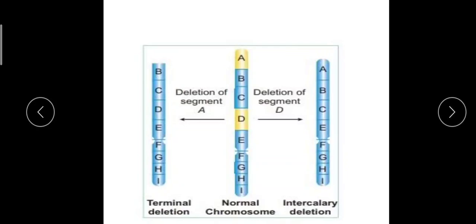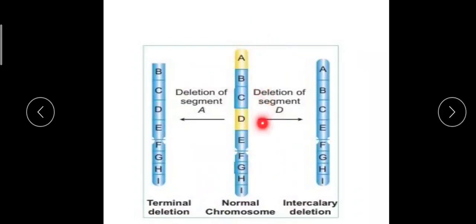Regarding heterozygous deletion: if we have two homologous chromosomes and deletion of segment 'a' occurs only in one chromosome while the other homologous partner still has the 'a' segment, then we call it heterozygous deletion. Only one chromosome of the pair undergoes deletion while the other retains that gene.